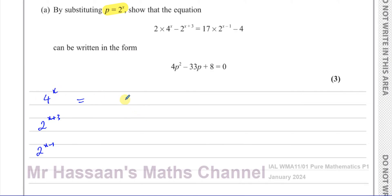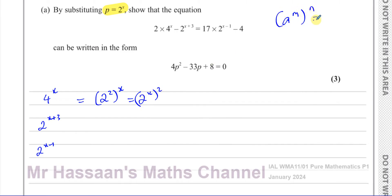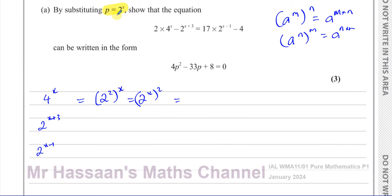I know that 4 to the power of x is the same as 2 squared to the power of x, because 4 can be written as 2 squared. And 2 squared to the power of x can be written as 2 to the power of 2x. Because a to the power of m raised to the power of n equals a to the power of m times n — you multiply the powers. So this can be written as p squared. Therefore 4 to the power of x can be replaced with p squared.